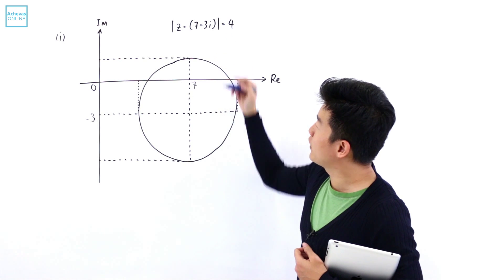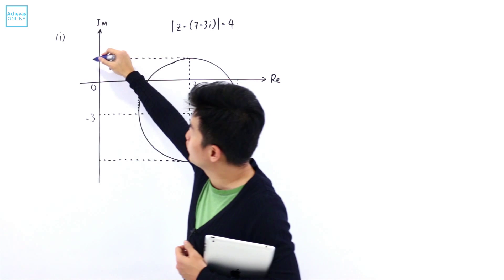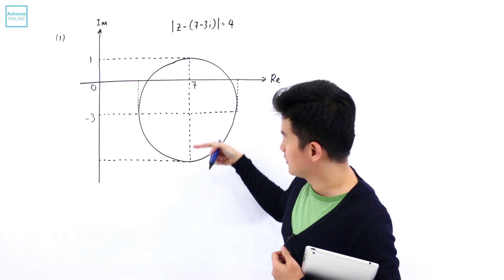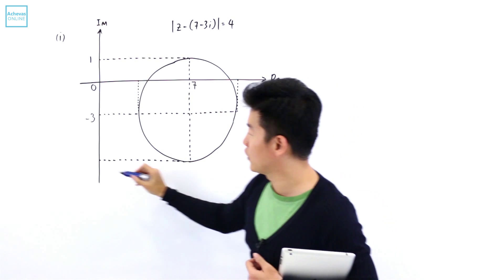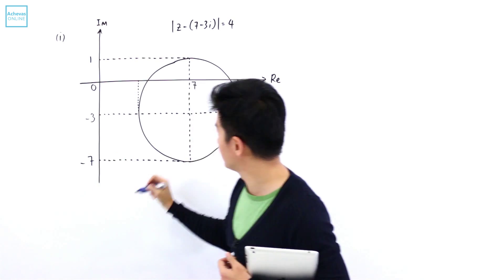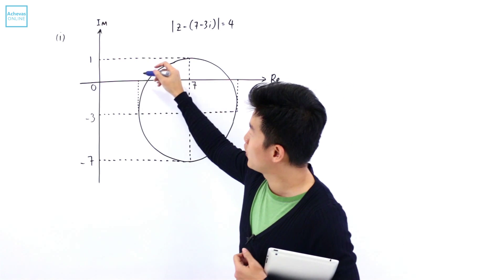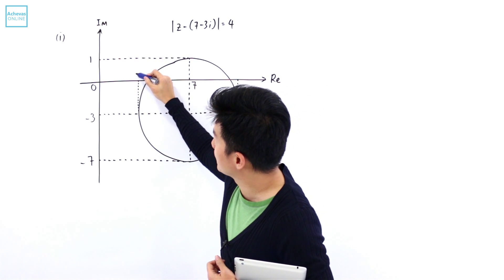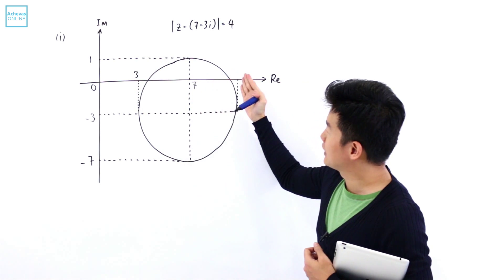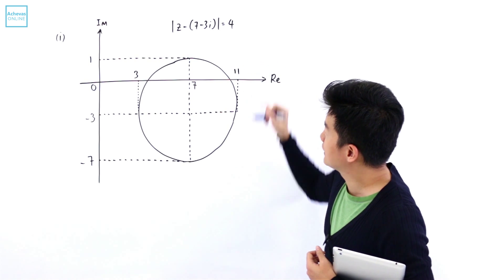The radius is 4, so this plus 4 is going to be at 1, and this minus 4 is going to be at minus 7. This minus 4 is going to be at 3, and this plus 4 is going to be at 11.